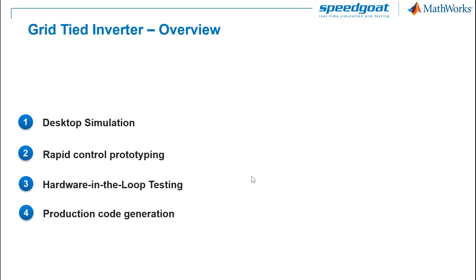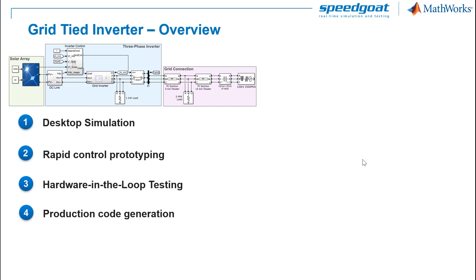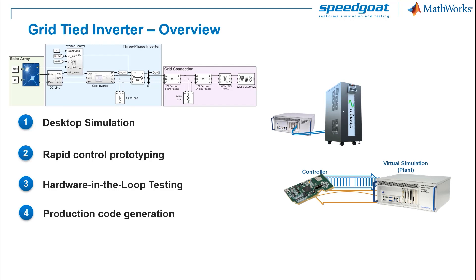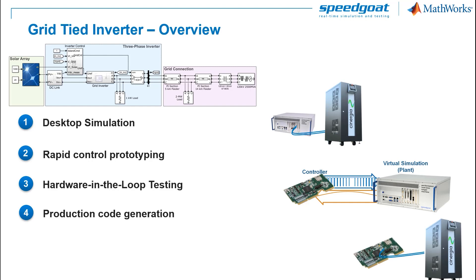We can de-risk the development process with model-based design. We would start with desktop simulation involving the plant and the controller. Then rapid control prototyping provides a reliable test platform with proven I/O connectivity and the capacity to measure and change parameters on the fly. Once the embedded controller seems ready, it is still important to use hardware-in-the-loop testing to validate and thoroughly test under all operating conditions and fault conditions. It is just then that we deploy using production code generation to an embedded platform.